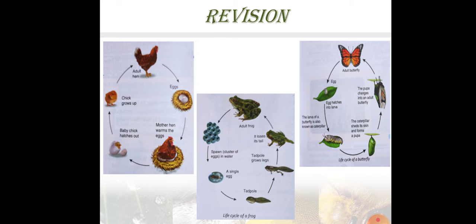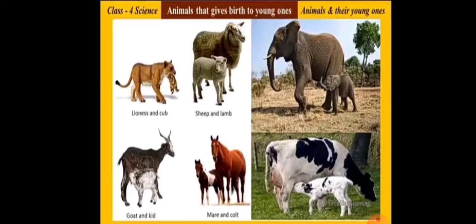Let's start our new topic. The second method of reproduction is giving birth to young ones. Some animals do not lay eggs. They reproduce by giving birth to young ones that feed on their mother's milk.